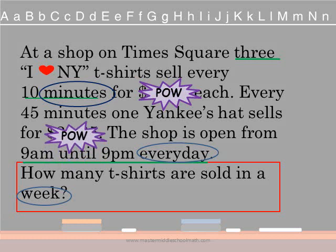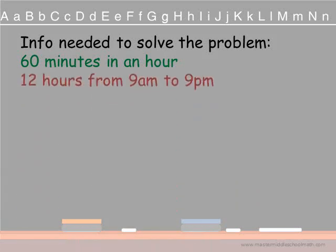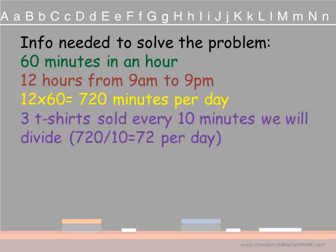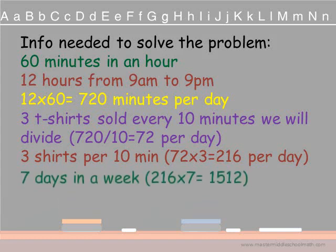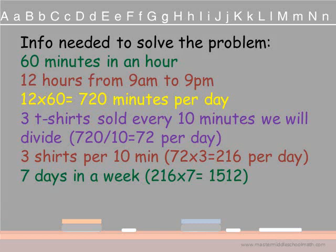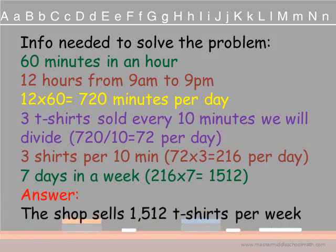The information we can knock out so we don't get confused is $19.95 each — knock that out, because they are not asking about cost, just about how many. And all the information about Yankees hats you can knock out, because they are not asking about hats, just t-shirts. Now solving: 60 minutes times 12 hours gives 720 minutes per day. Divide 720 by 10 gives 72 groups of 10 minutes. Multiply 72 times 3 gives 216 t-shirts per day. Multiply 216 by 7 days gives 1,512. The shop sells 1,512 t-shirts per week.